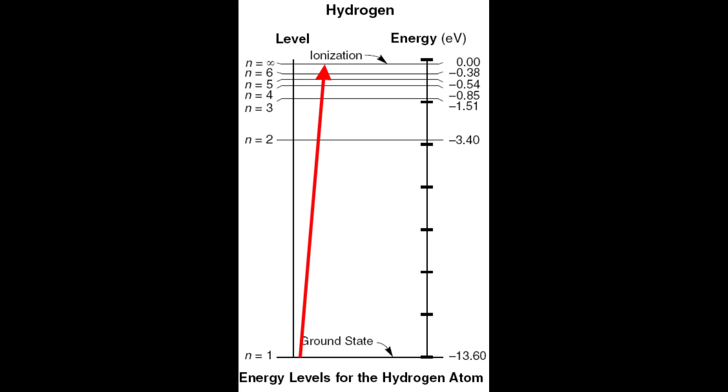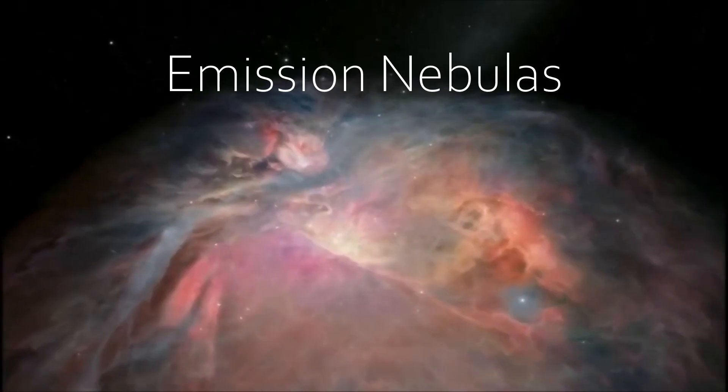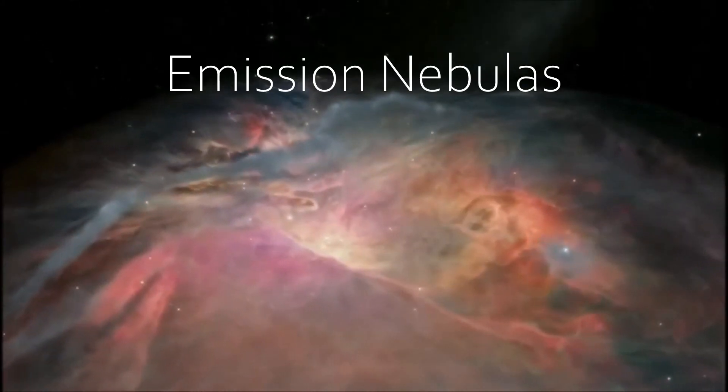However, the electrons will then drop back into their old energy states. They will do that following the ladder of possible energy states. With every drop the energy difference is emitted as a photon, so as light with a certain color. As the energy ladder is unique to each element, the emitted color lines are like a fingerprint of that element. So emission nebulas shine in their unique colors.